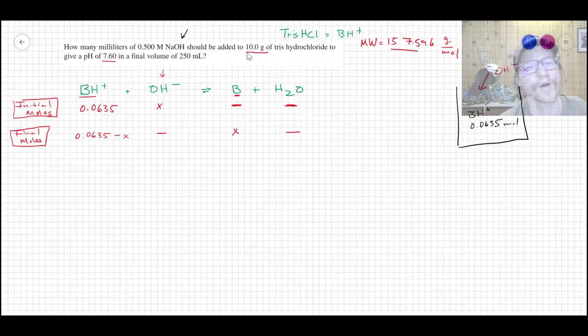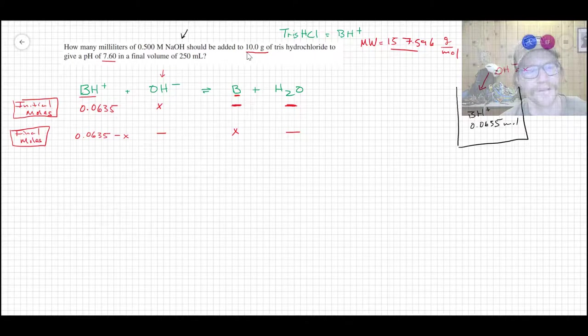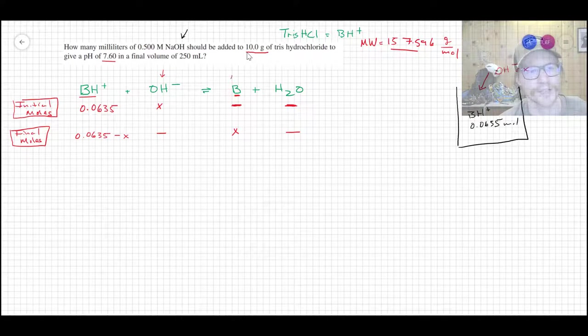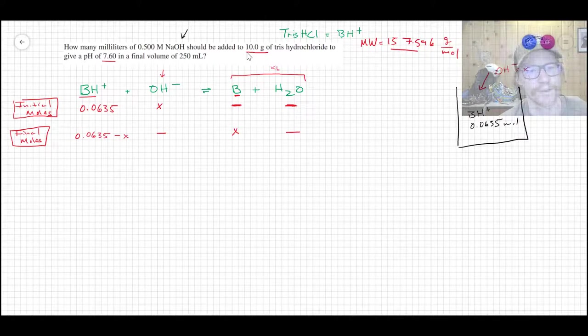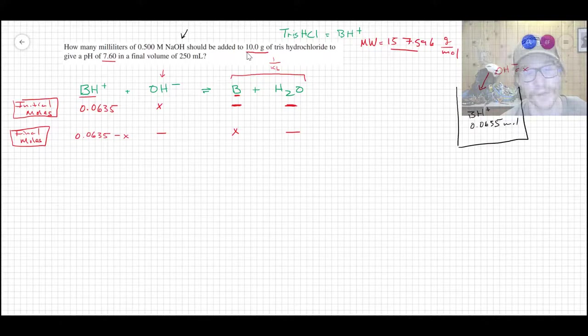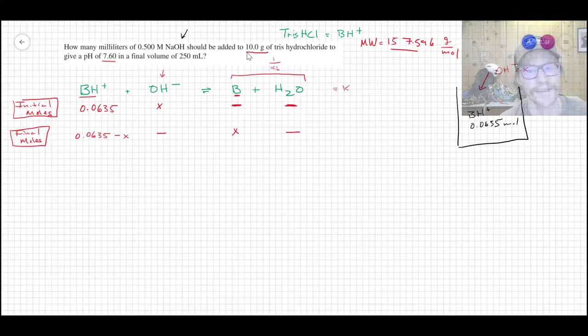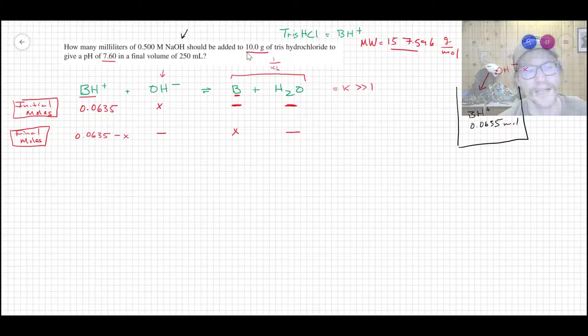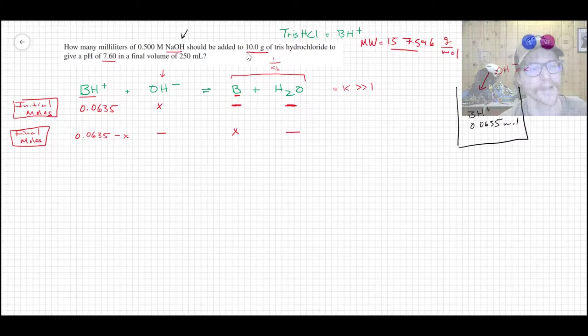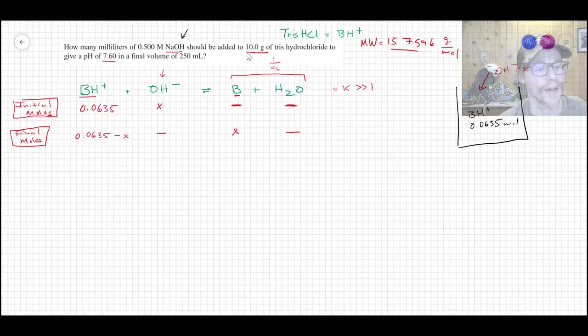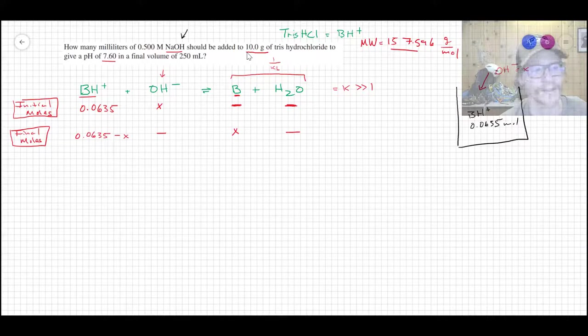So then at the end of this, after we add the OH-, we know that the hydroxide is going to react with BH+ to completion because you get a strong base and a weak acid. And we would know that the K for this is actually going to be 1 over Kb because if you think about this reaction here, base plus water, that would have been Kb. But since this is the reverse of that, this is 1 over Kb.